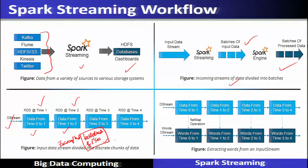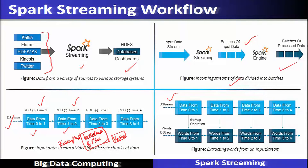It is recommended to use a minimum half-second batch for better end-to-end latency. Once this data stream or DStream is created by the Spark streaming system, various transformations can be applied, which are also part of the Spark streaming system.